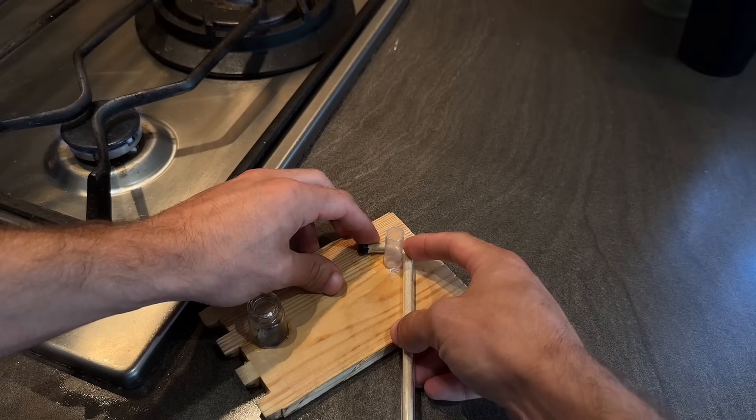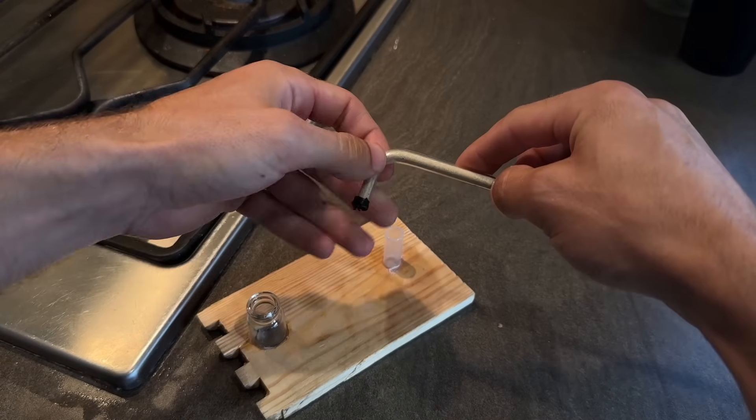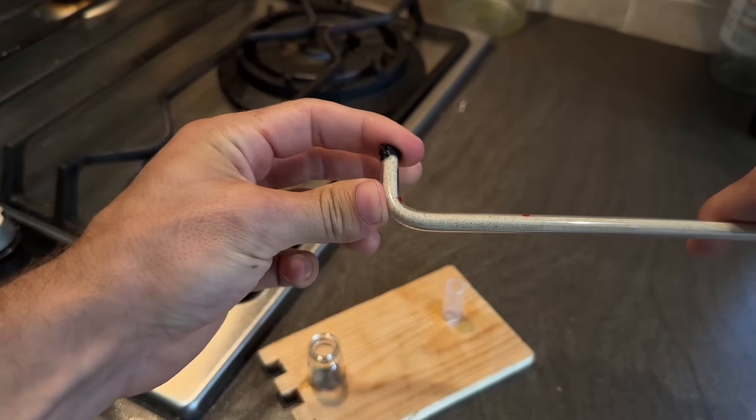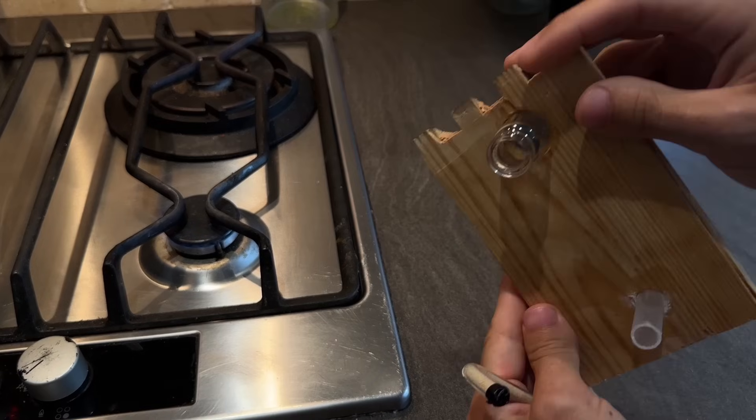After only about five seconds it starts to harden up and set in place. Once I'm happy with the shape I'll run it under some water to cool it down. Now let's make the second bend using the larger part of the jig.